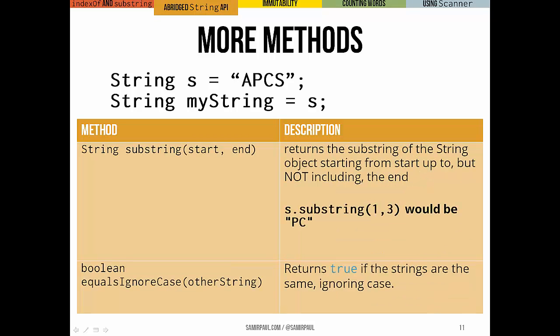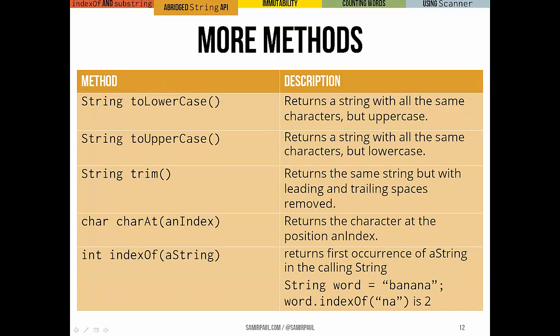substring we've seen, this right here is a version of it that takes only a single parameter. It just goes from this starting position up until the end of the string. This is the version of substring that we saw before, giving us a start and an end position. Important to remember, it includes the start, but not the end. equalsIgnoreCase we've seen before. It's going to return true if the two strings are the same, but it will ignore differences in case, which is often very helpful.